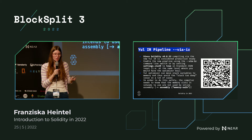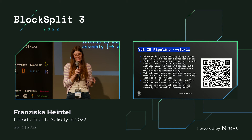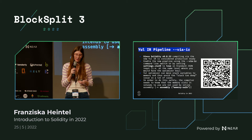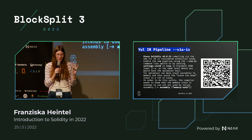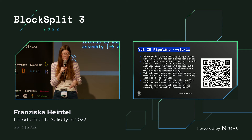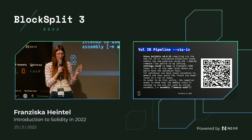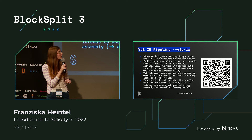The most relevant part for developers is that the Yul optimizer used in this new pipeline can move stack variables to memory, avoiding in many many cases the stack-too-deep issue. This was one of the most annoying issues developers told us about in the language survey. In order to do this safely, you need to let the compiler know that the memory slots are not used by inline assembly — you have to mark them as memory-safe. All of this is explained in the linked blog post.